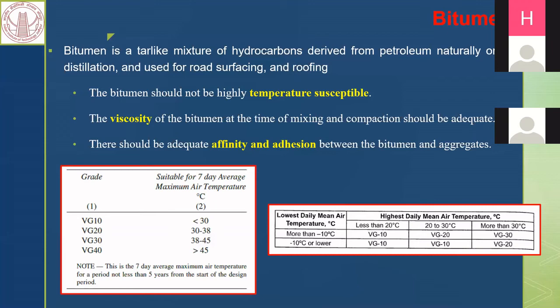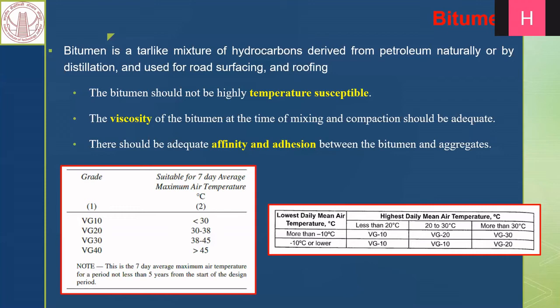The second desired property is adequate viscosity at the time of mixing and compaction. If viscosity is not adequate during mixing, bitumen will not form a uniform film around the aggregates. Without that uniform film, bonding between aggregates will be inadequate, and the durability of the mix will suffer. Viscosity is therefore a very important property for bituminous mix design.